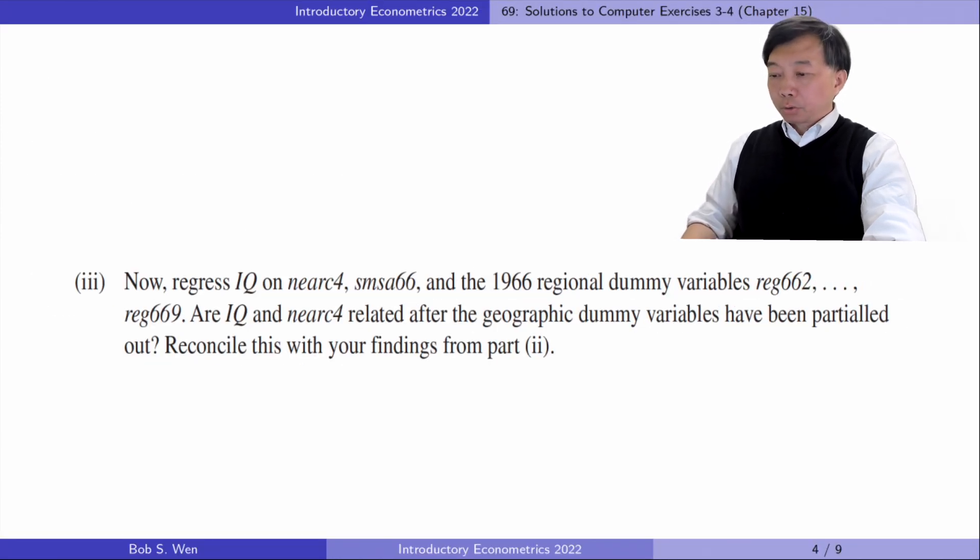In part three, we regress IQ on near C4 and SMSA 66 and eight geographic dummy variables. Are IQ and near C4 related after the geographic dummy variables have been partialed out? Reconcile this with your findings from part two.